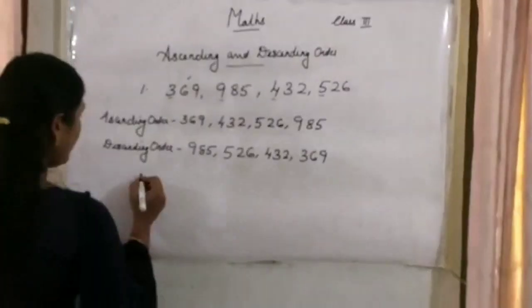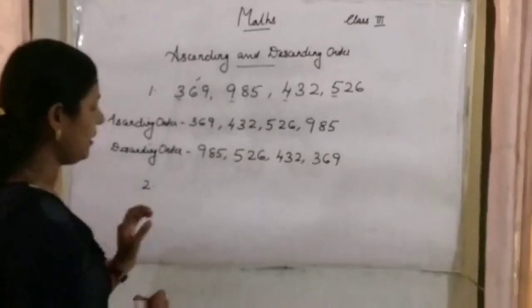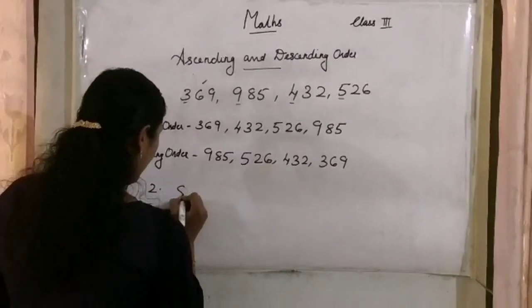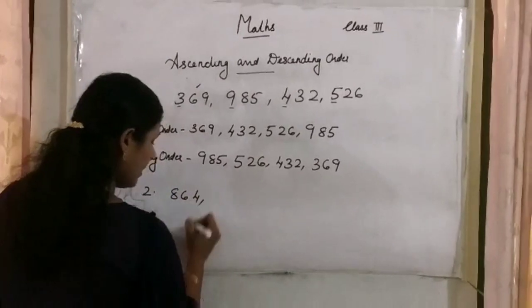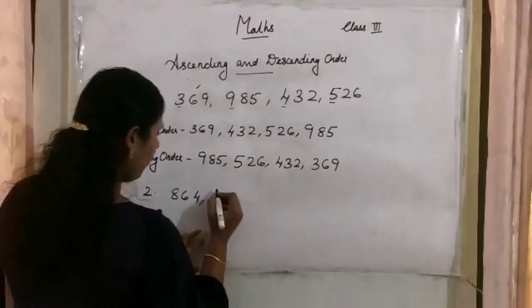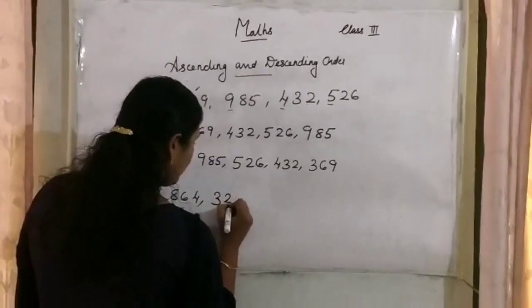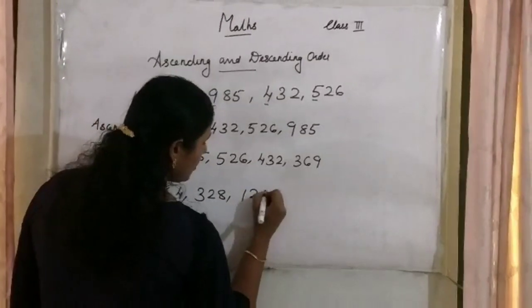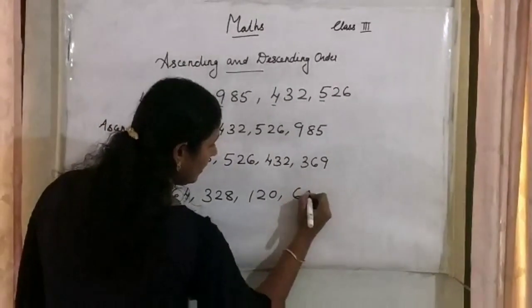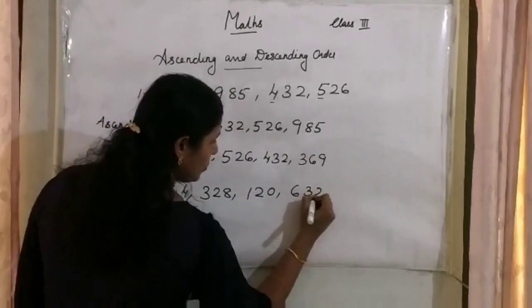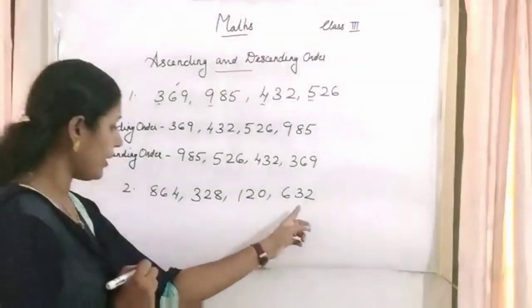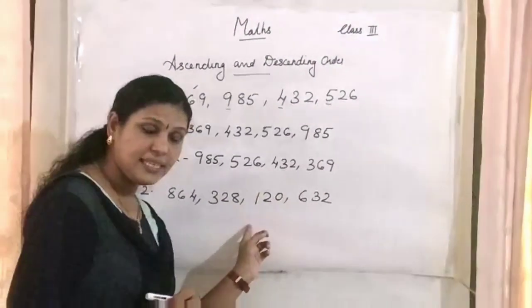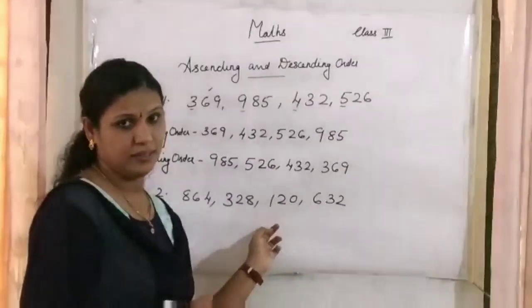Now you can do a question yourself. The numbers are 864, 328, 120, and 632. You can write these numbers in ascending and descending order.